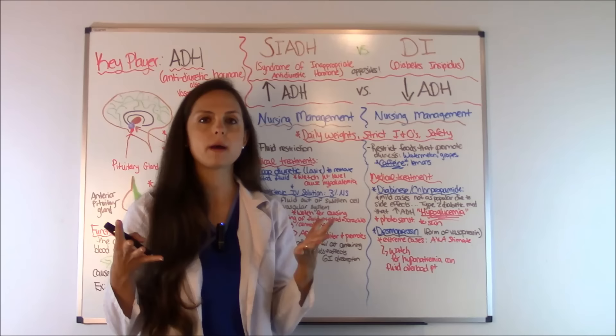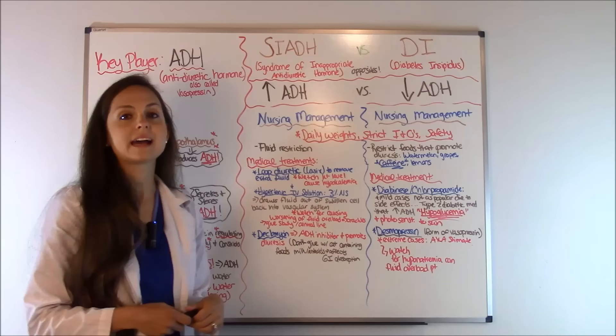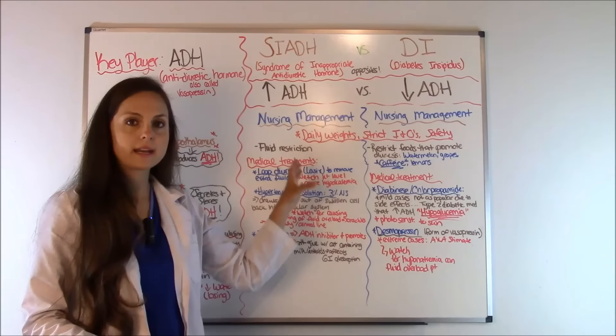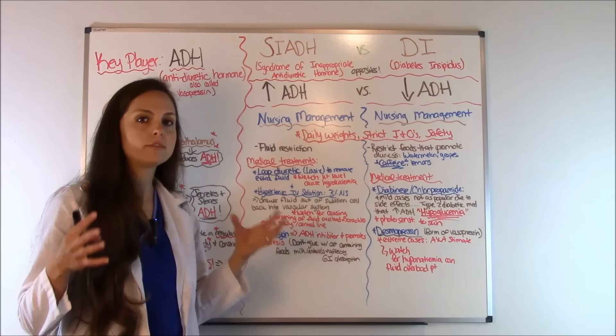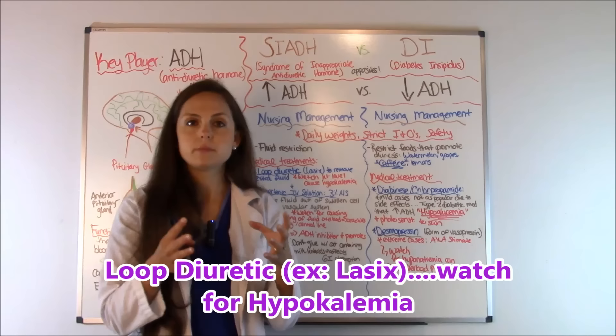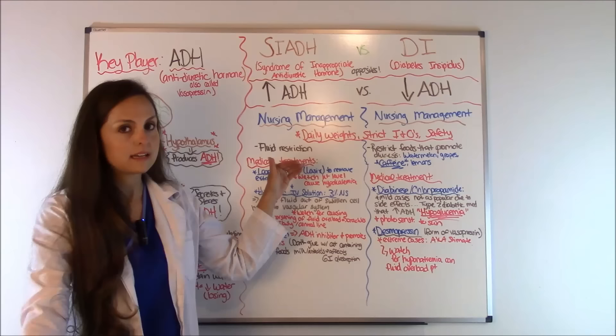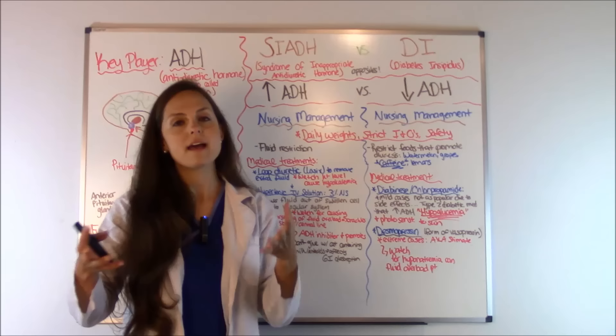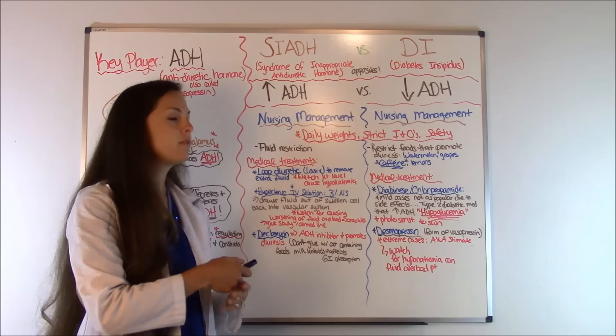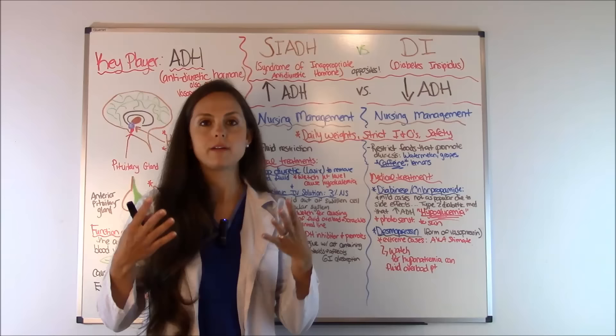For typical medical treatments in SIADH, the goal is to remove the excess fluid and restore good fluid status. A physician may order a loop diuretic — Lasix is a loop diuretic given IV or PO — to cause the patient to urinate off the excess fluid. However, watch out for hypokalemia, because loop diuretics waste potassium when the patient urinates. Always check potassium levels before giving the next dose of Lasix.